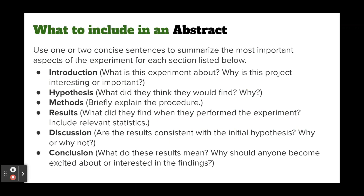These are the things that are included in an abstract. We use one or two concise — meaning short, to the point — sentences for each of these bulleted items: what is the experiment about, why is it interesting or important, what did we expect to find and why, what were the procedures, what were the general results, were the results reliable and why or why not, and what do the results mean and why should we care about them.